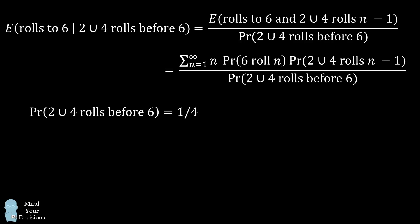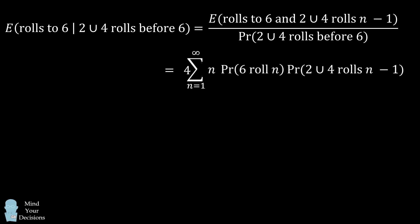So this becomes the denominator. And now we're dividing by 1/4, which will mean that we're multiplying by 4. We now have to figure out this summation. But we've already calculated some of these probabilities. The probability that we roll a 6 on any particular roll is 1/6. And the probability that we get 2 or 4 up to that roll will again be the product of 1/3 to the power of n minus 1.